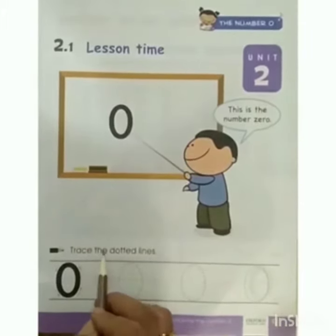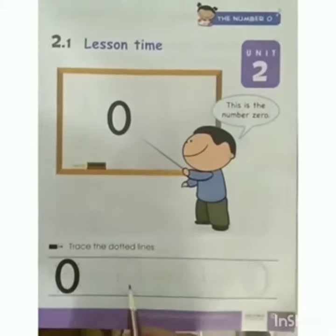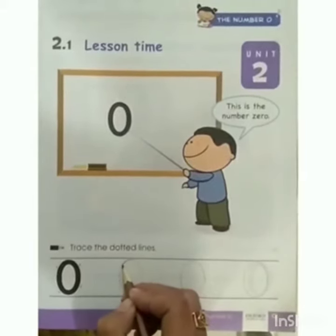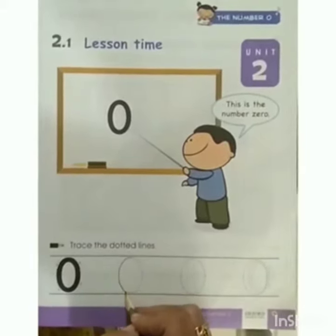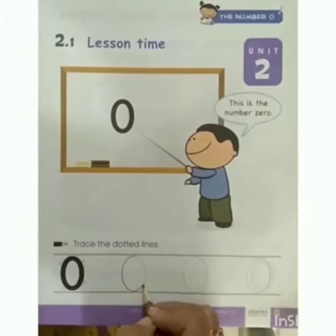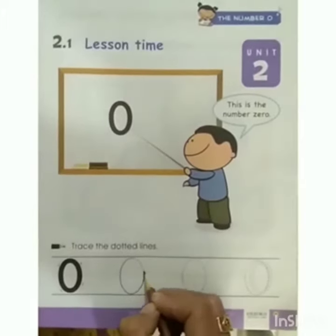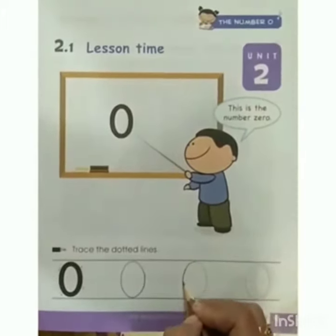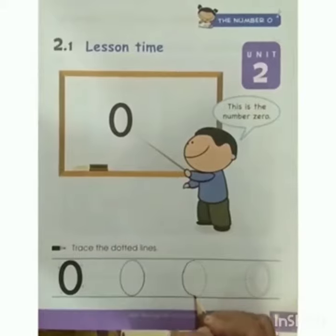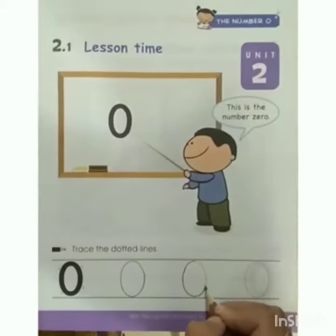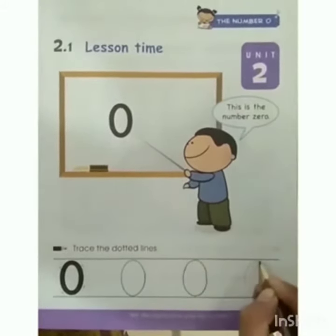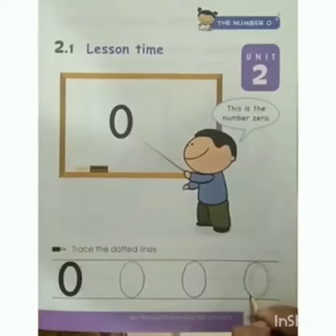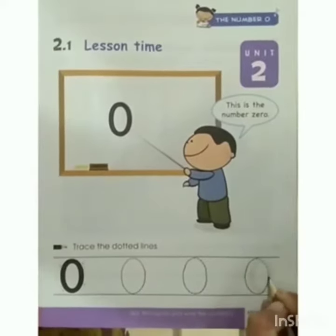Trace the dotted lines. Let's write number 0. Join the dotted lines with each other neatly to make the number 0. This is number 0. Trace the dotted lines to make 0.